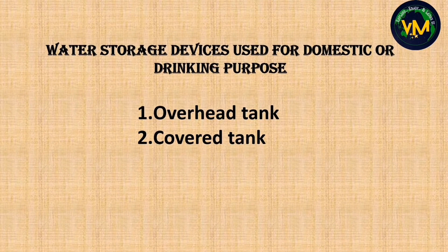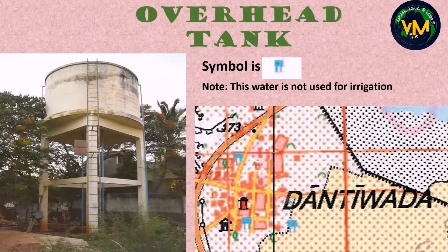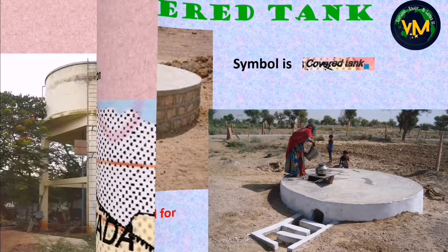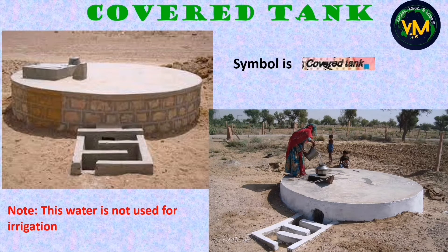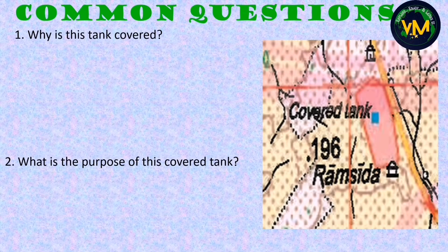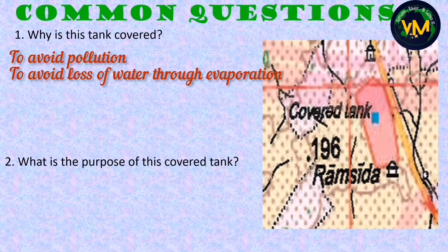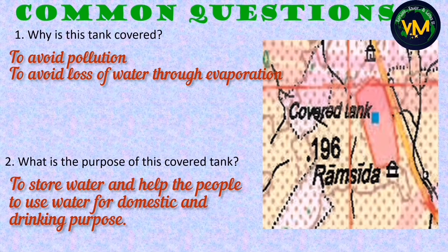These are two water storage devices used for domestic or drinking purpose, not for irrigation. The first is an overhead tank — represented in our topographical map by a blue color square with two lines below it. The second is a covered tank — represented by a blue color square with the words 'covered tank' written there. It is covered to avoid pollution and to avoid loss of water through evaporation. Its purpose is to store water for drinking and domestic use — remember, do not write for irrigation.